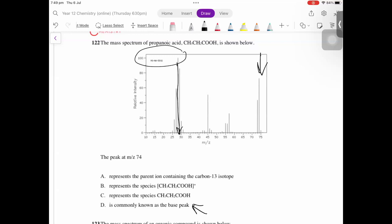So the one at 74 is called your molecular ion peak, not your base peak. So that's off.